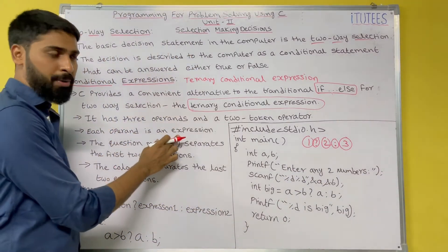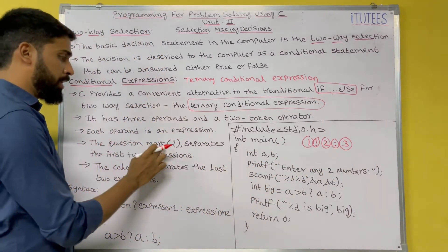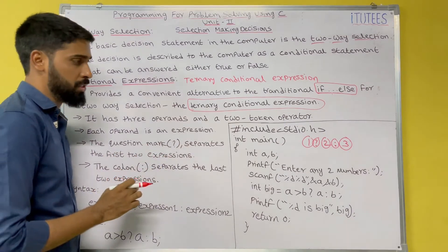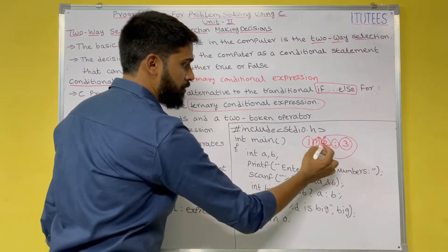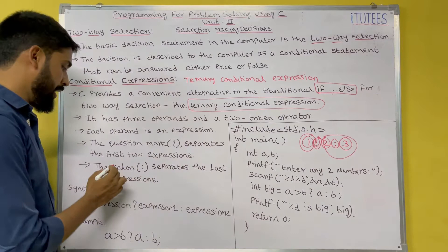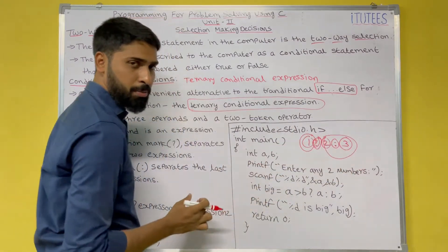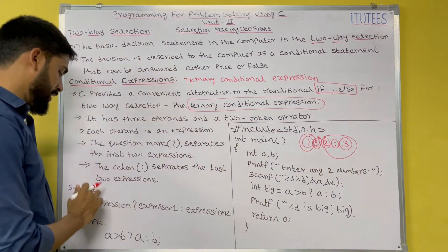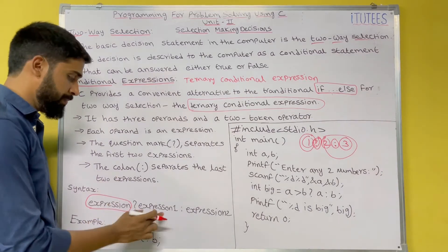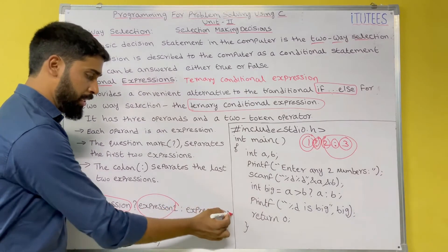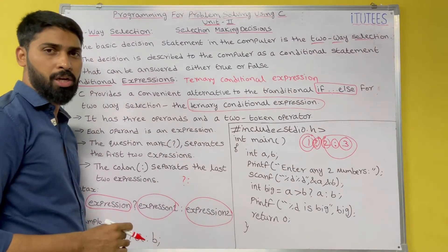Each operand is an expression, so these three are the expressions. The question mark separates the first two expressions, and the colon separates the last two expressions — that means expressions two and three. The syntax is: expression one, question mark, expression one, colon, expression two. This question mark and colon we call the ternary conditional operator.